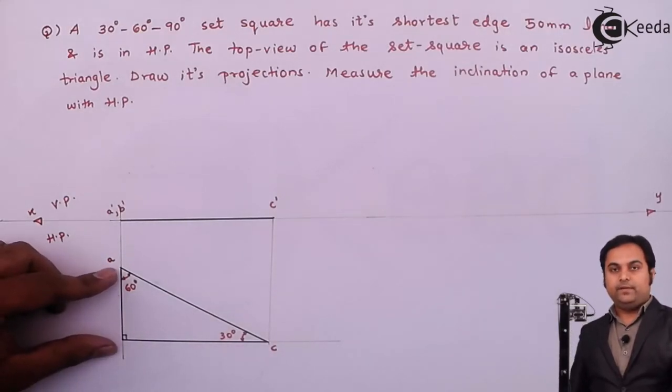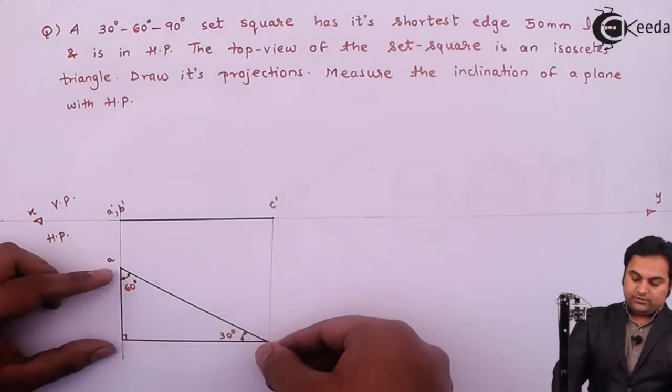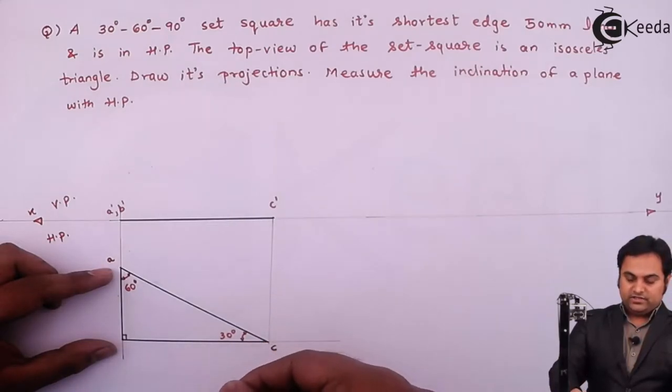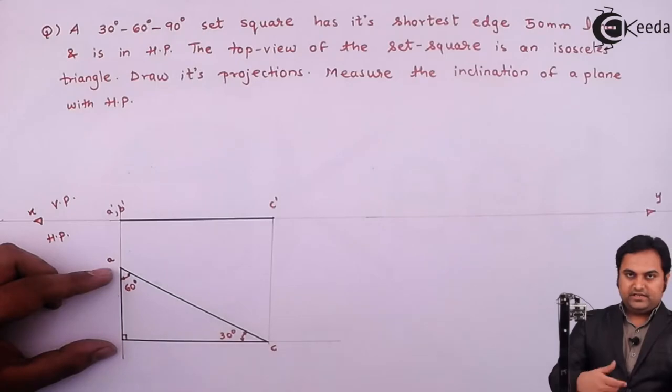Next thing is, I'll have to keep A, B as constant and fixed. Then picking up C, I am going to lift this set square. Now when I'm going to lift it, in that case, I should get it as an isosceles triangle.